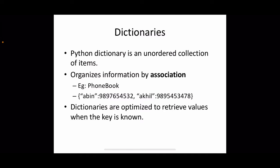The second specialty of dictionary is that it organizes information by association. For example, a phone book in your mobile: there's an association between a name and a number. To store a set of associations we use dictionaries. The name of a person and their mobile number is an association. We are not bothered about the position, but once we give a name for searching we should get the corresponding phone number. That is the purpose of a dictionary.